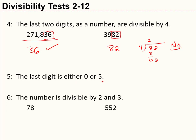Divisibility by 6 is what we might call a compound trick. I need to check if the number is divisible by both 2 and 3. If it is divisible by 2 and 3, then it is divisible by 6. Let's check 78: it ends in 8, so it's divisible by 2. Then 7 plus 8 equals 15, and 15 is divisible by 3. So yes, 78 is divisible by 6.